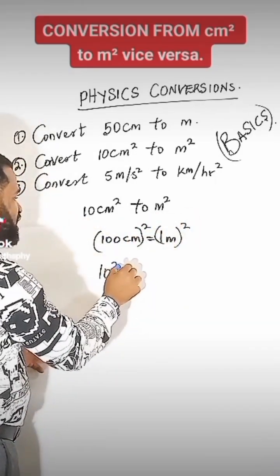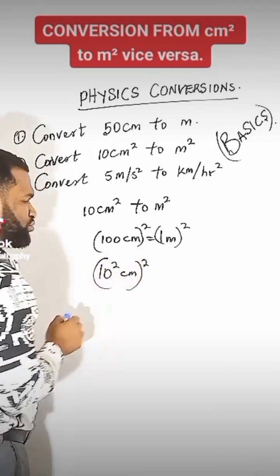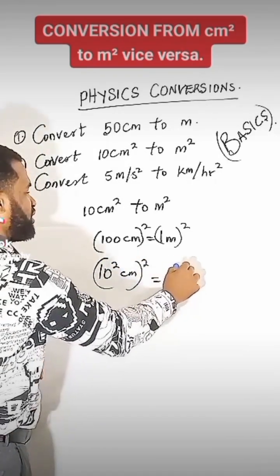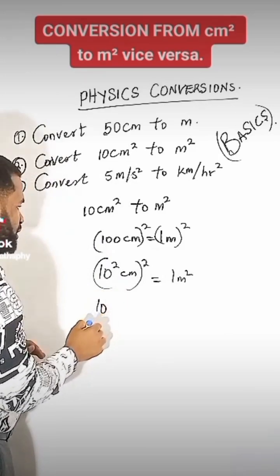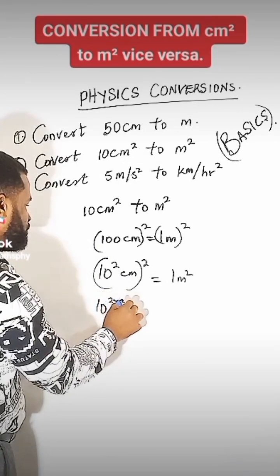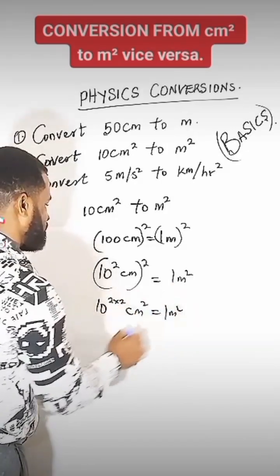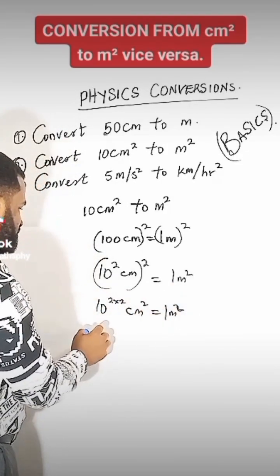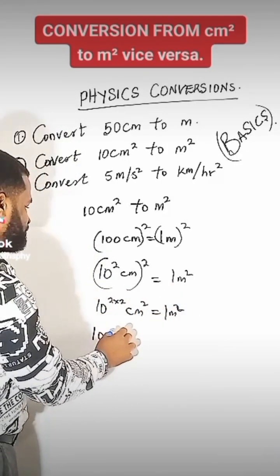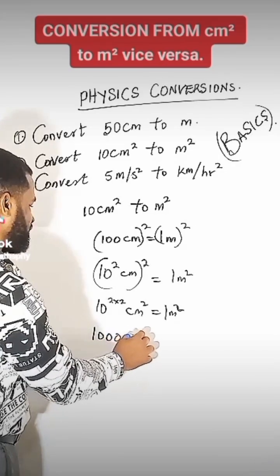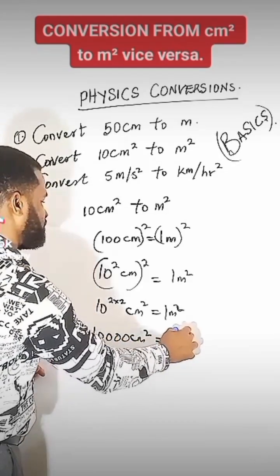You have 10 raised to power 2 cm, all raised to power 2, is equal to 1 meter squared. So this is 10 raised to power 2 times 2 cm is equal to 1 meter squared. This is the same thing as 10,000 cm squared is equal to 1 meter squared.